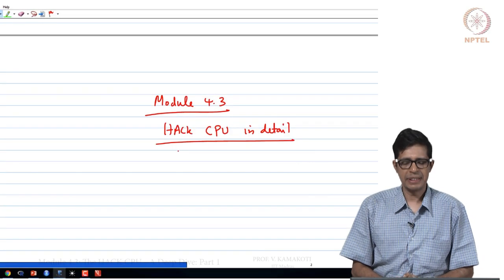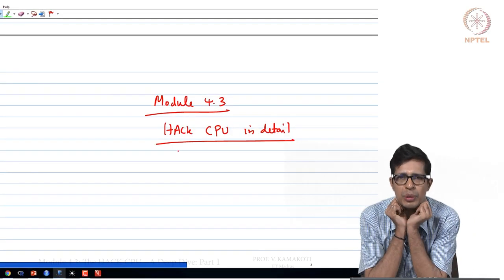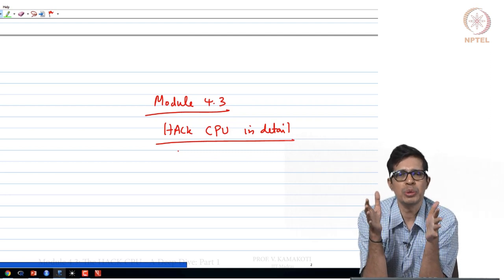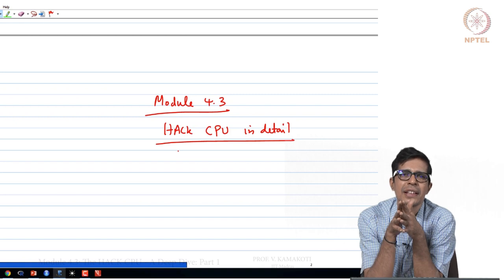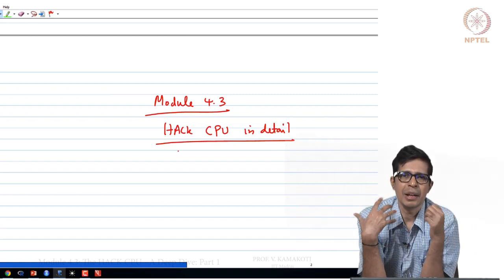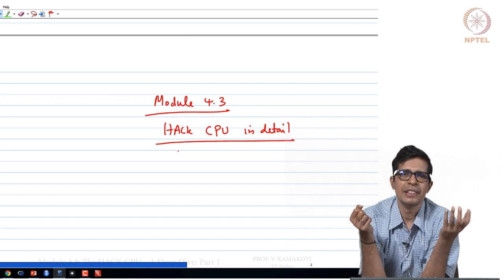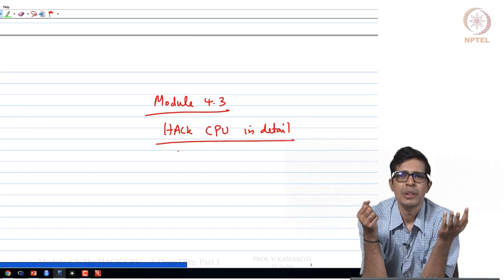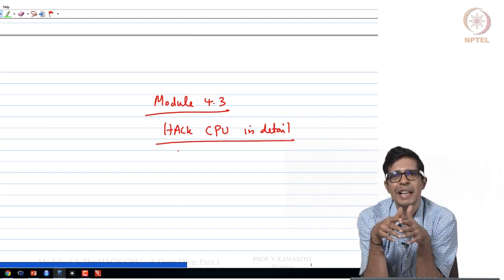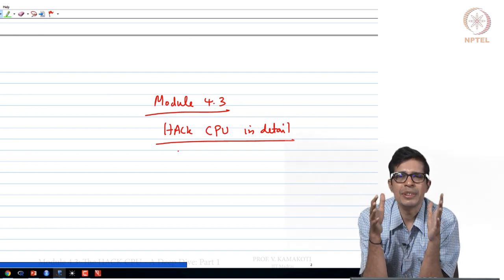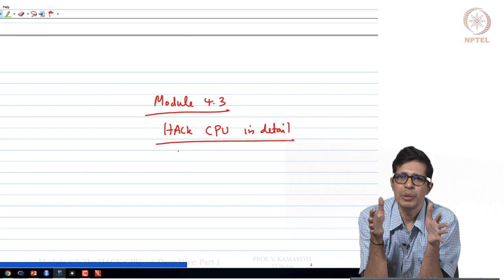Welcome to module 4.3. In this module we will discuss the Hack CPU in great detail. We have seen what the Hack computer will look like — the computer comprises three things: the ROM where instructions will be stored, the CPU, and the data memory. In this particular module we will see the CPU in detail.